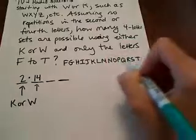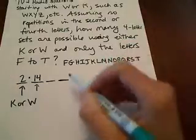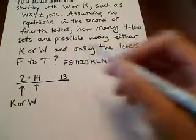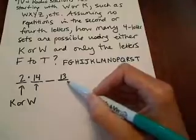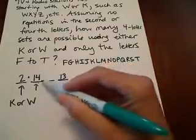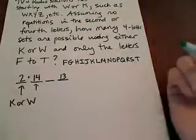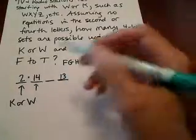So we only have actually 13 choices to choose from here for this last slot. The reason is we can't choose K and we can't choose whatever we chose here. Okay. So there's 13 choices there.